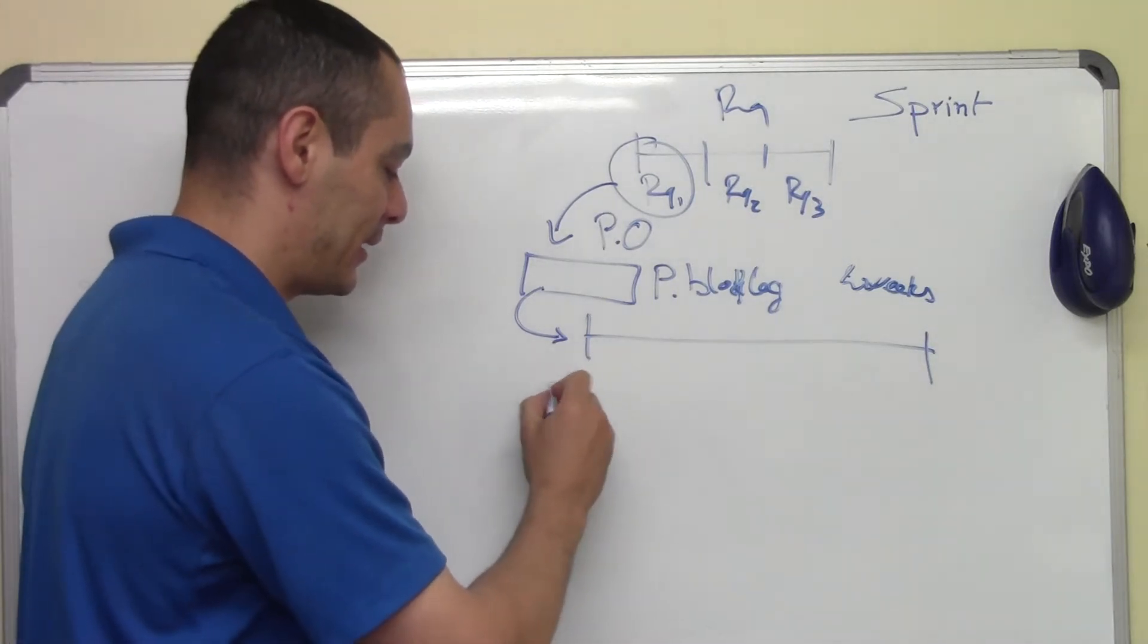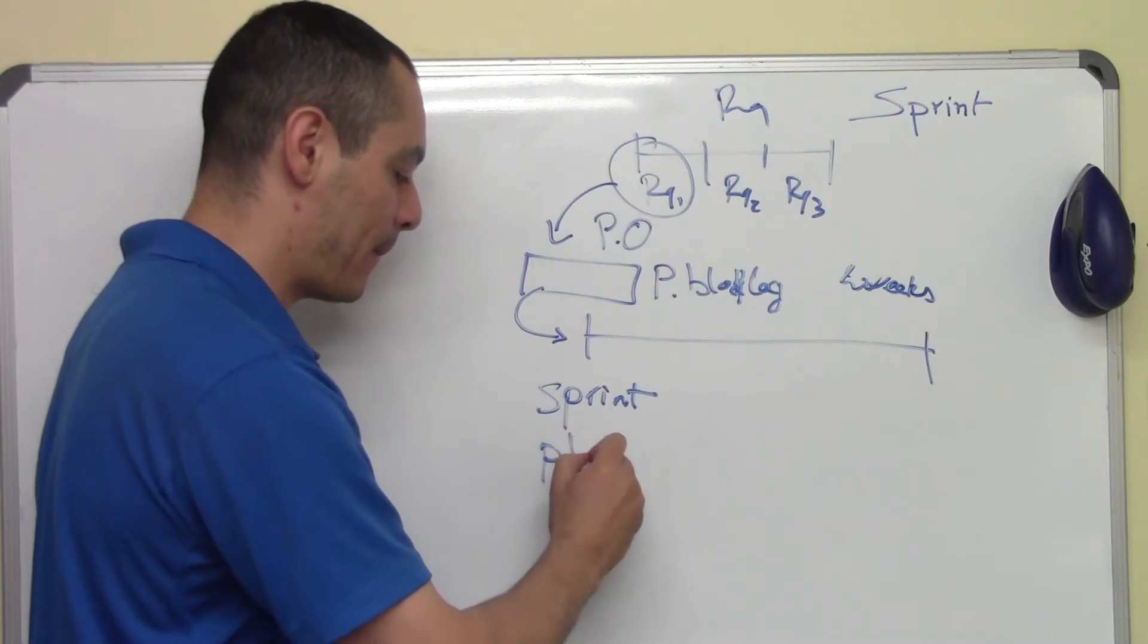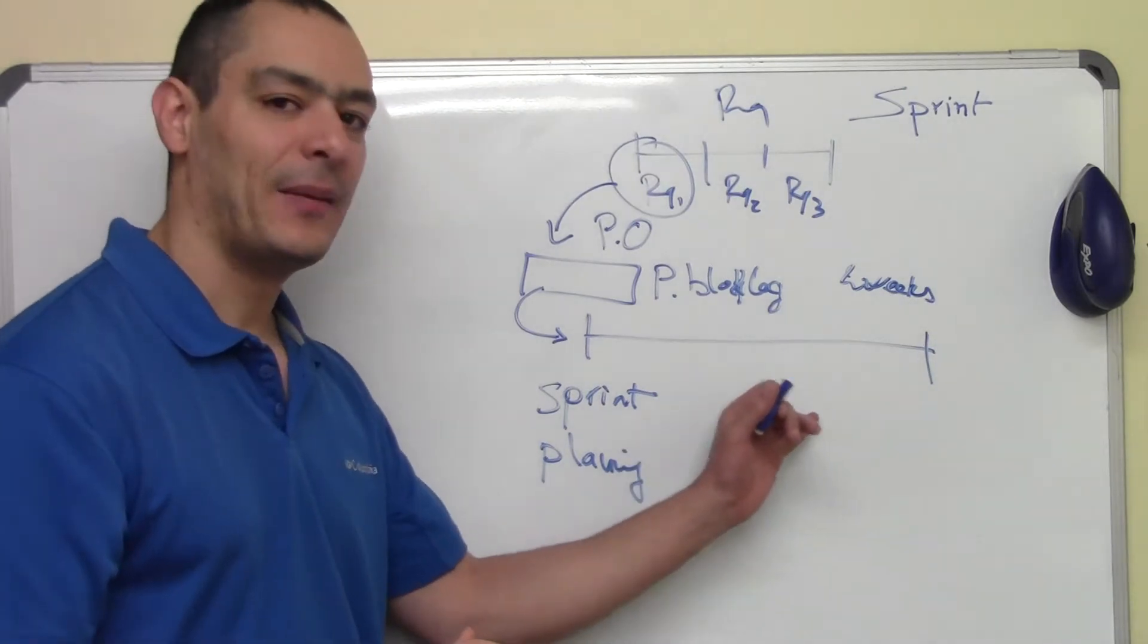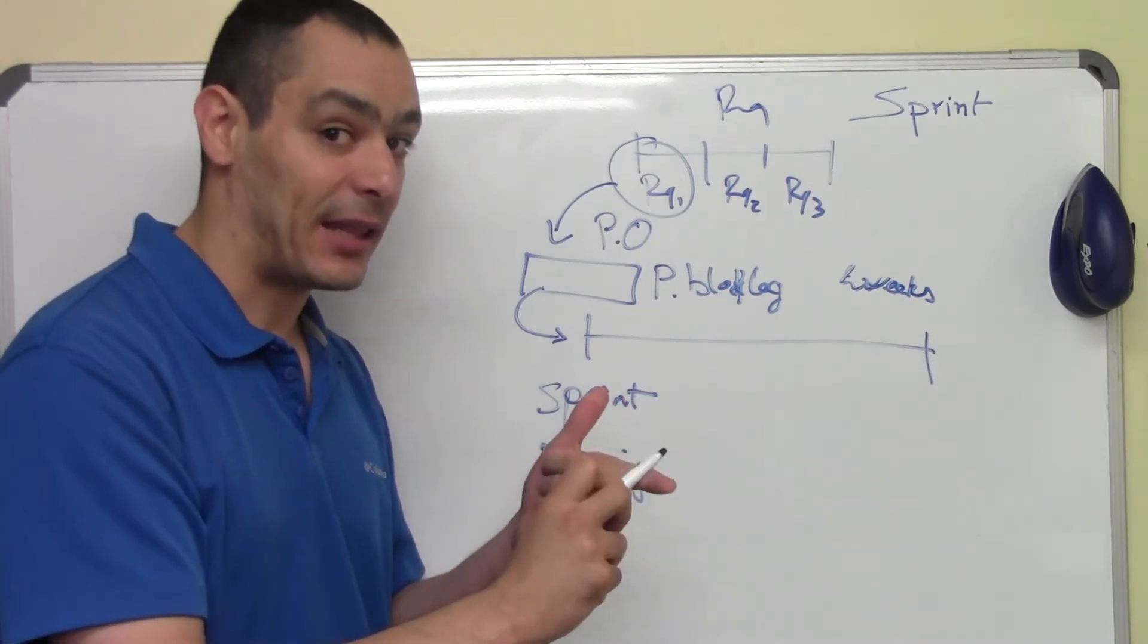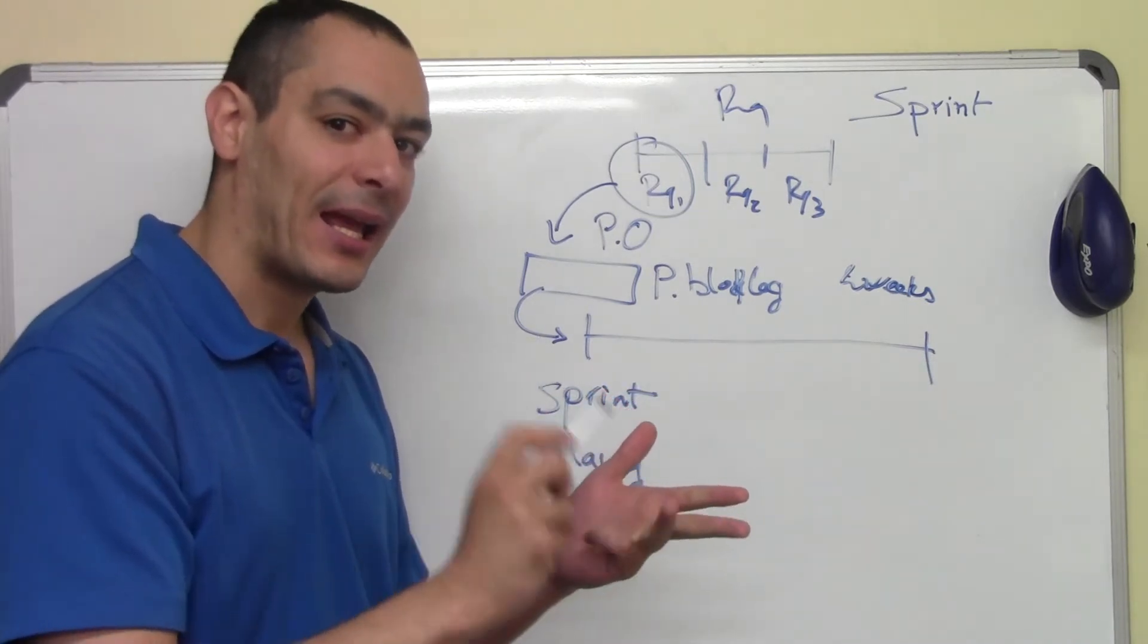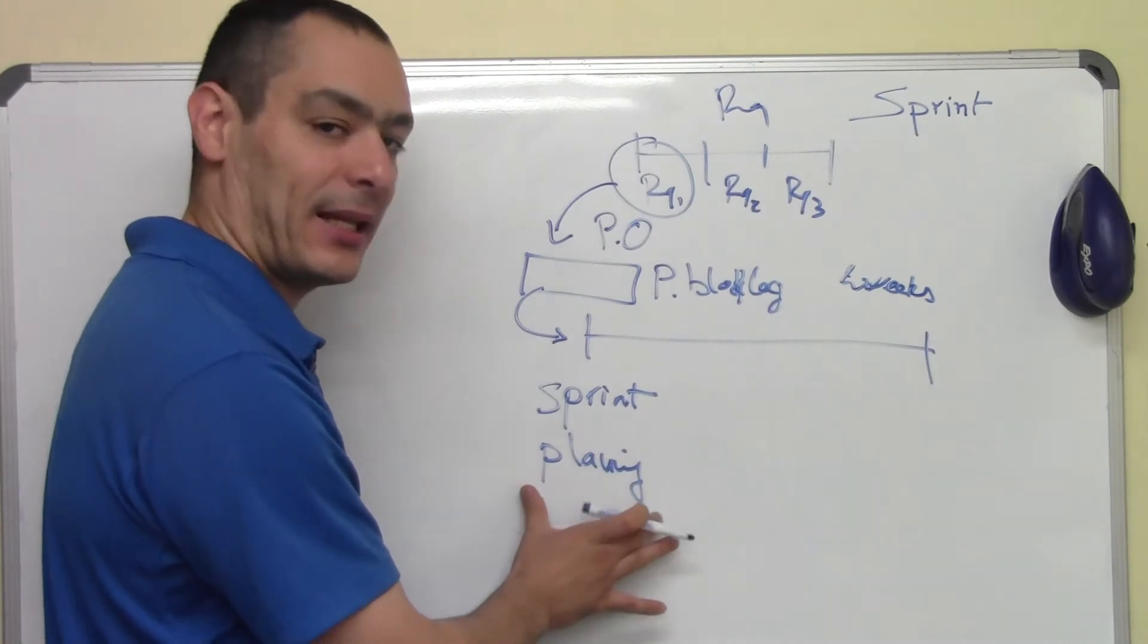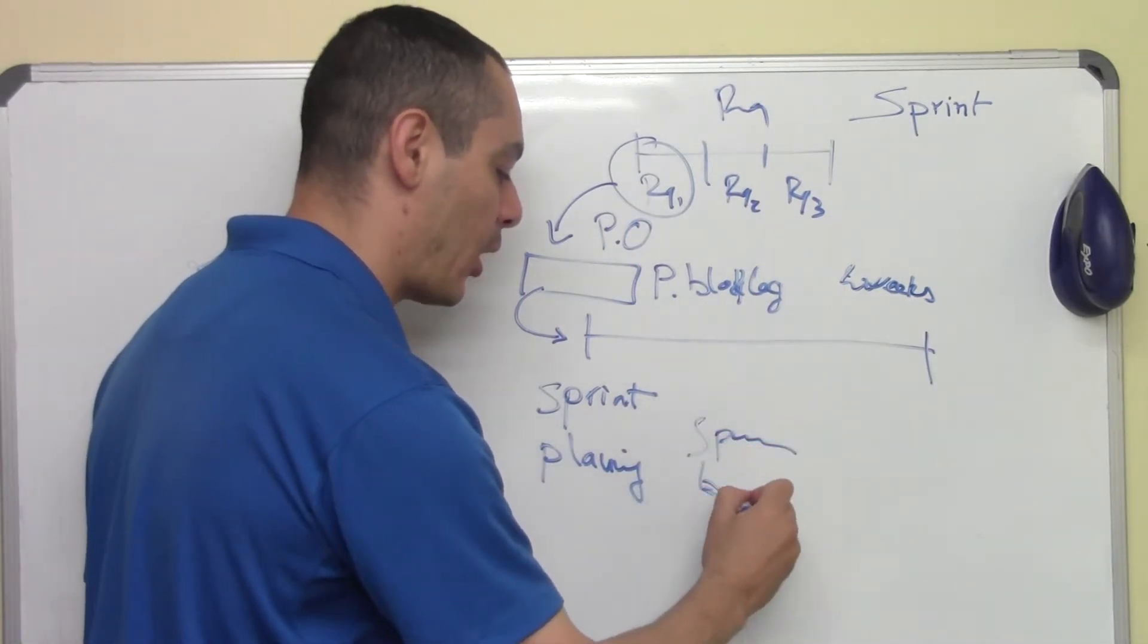The team will make the Sprint planning. The Sprint planning is basically just a meeting where the team is going to talk about how to make the tasks, clarify them. Estimate the time and make the commitment. And during this Sprint planning, they're going to make what we call the Sprint backlog.